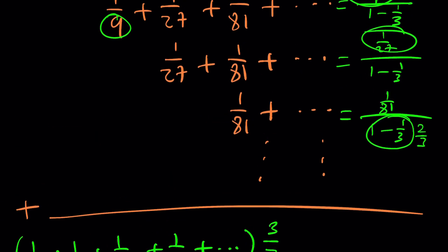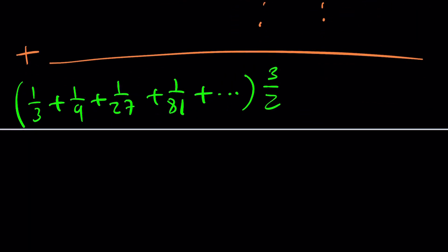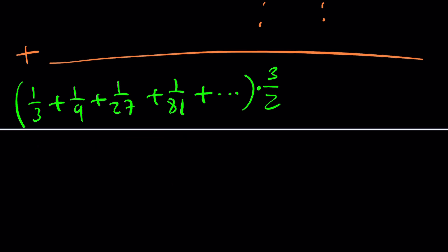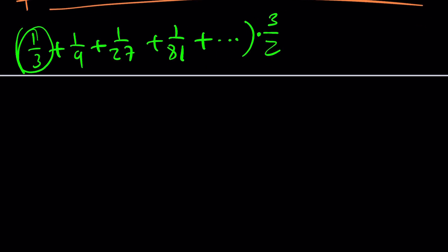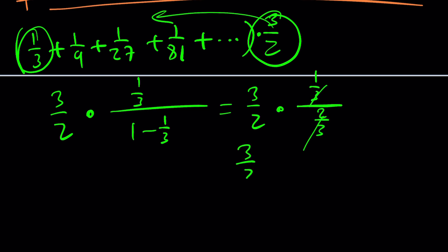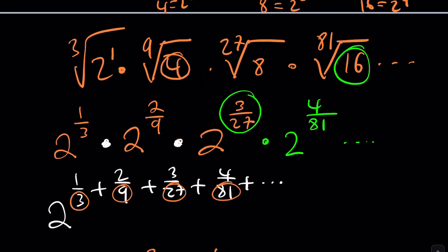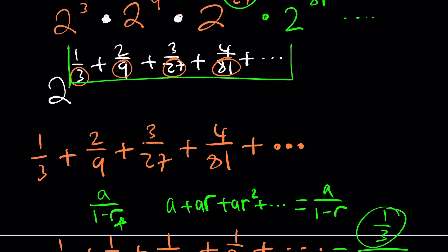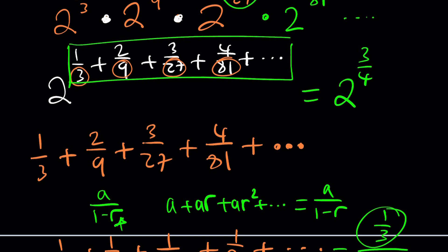So we get three halves times one third divided by two thirds, which is one half. Three halves times one half is going to be three fourths. Of course, that's not the final answer by itself — because if you go back to where we came from, the three fourths is just the exponent. So the answer is 2 to the power three fourths, which is the 4th root of 8. Yes, that would be the answer: 2 to the power three fourths.